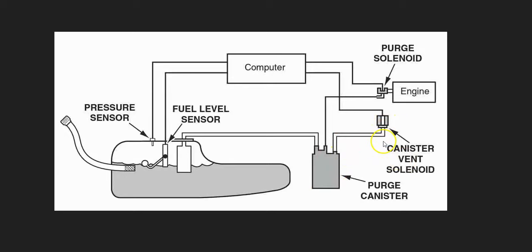Down by the canister is also what's called a vent valve solenoid, which is used by the onboard computer to test the whole system. The computer sends signals to open and close it at certain times to verify everything is working correctly. The computer gets this information from what's called a fuel tank pressure sensor, which reports back what's going on inside the system.